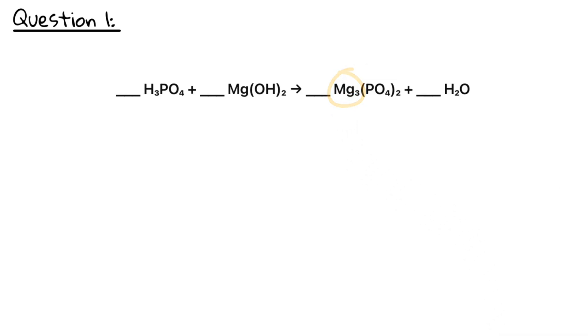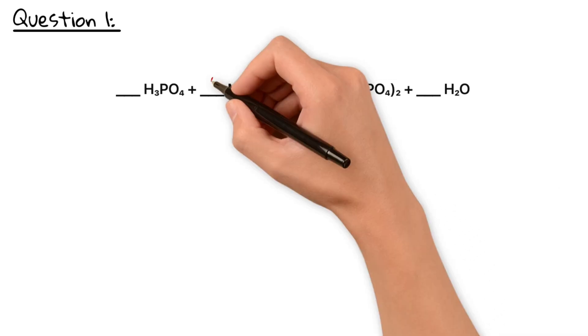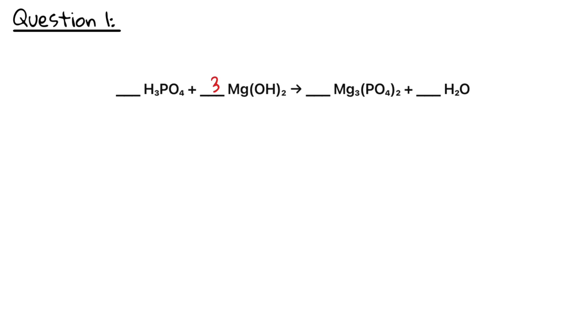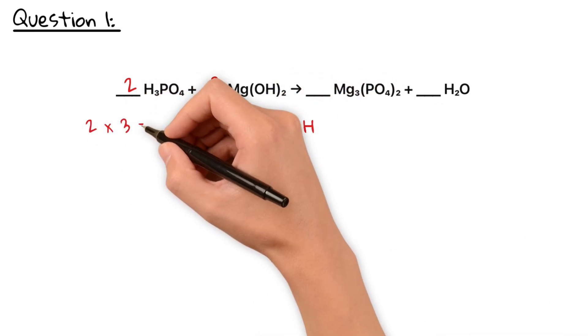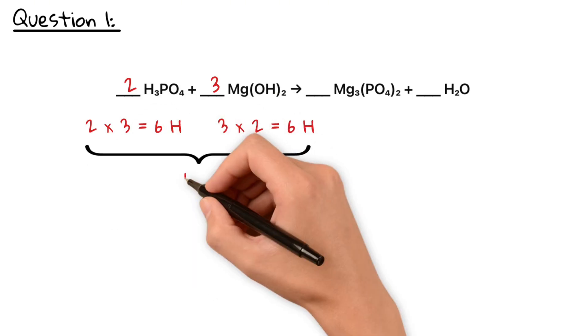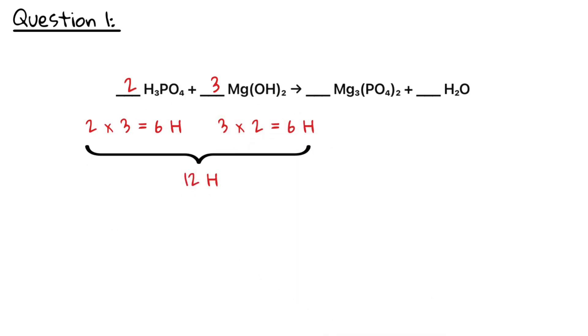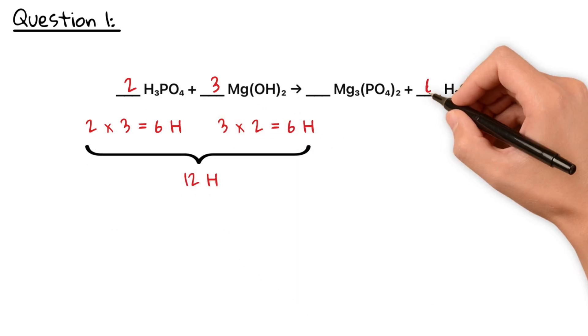Since on the right side, we have three magnesium atoms, we need three magnesium hydroxides on the left. The phosphate ion appears twice on the right side. So we need two H3PO4 on the left. On the left hand side, we have six hydrogen from the acid and six hydrogen from the base. So a total of 12 hydrogens. To balance this, we need six H2O.